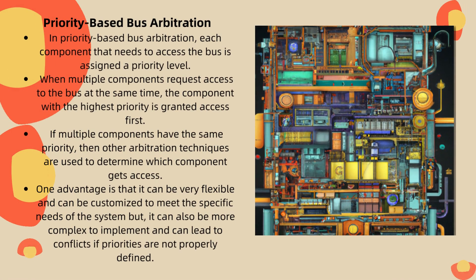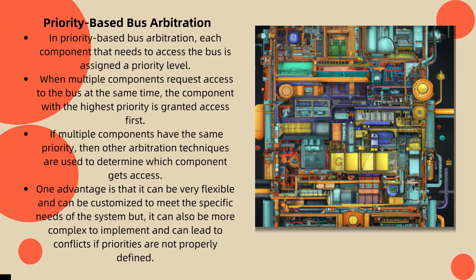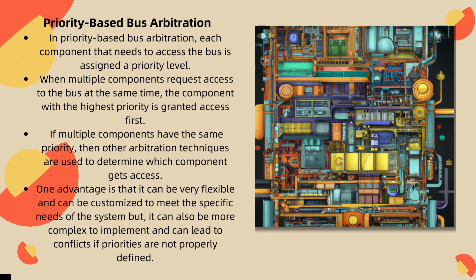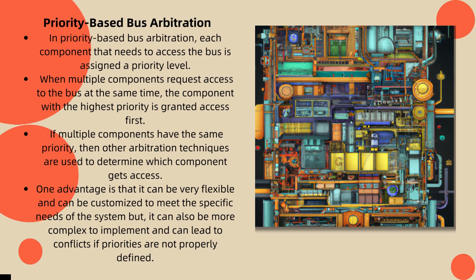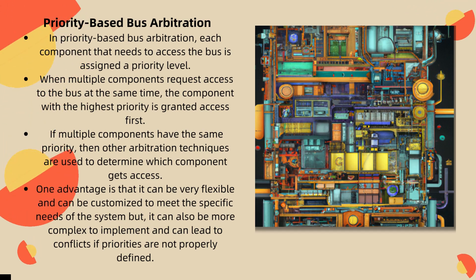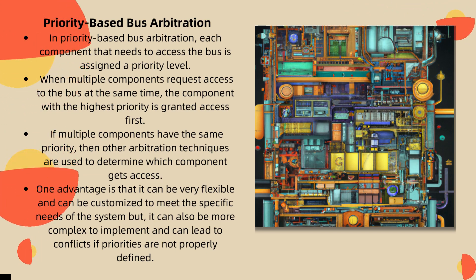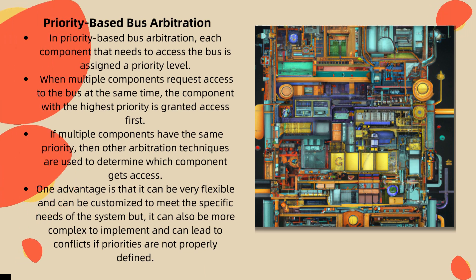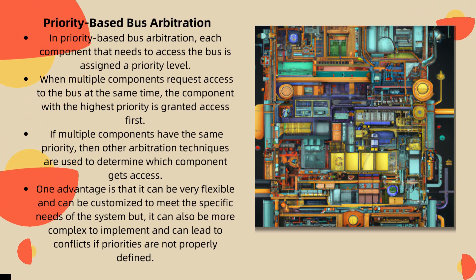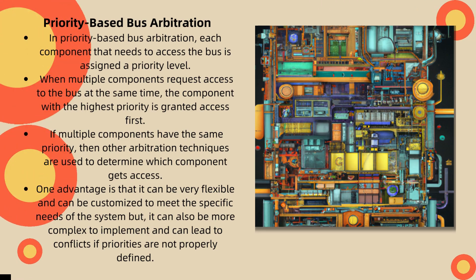My name is Aditi Kohore, roll number 43. The third type of bus arbitration technique is priority-based bus arbitration. Each component that needs to access the bus is given a priority level. The component with the highest priority is given access first when many components simultaneously request access to the bus. If more than one component has the same priority, access is allocated according to alternative arbitration methods. One advantage of this technique is that it can be very flexible and customized to meet the specific needs of the system. However, one disadvantage is that it can be more difficult to implement and can cause conflicts if priorities are not clearly defined.